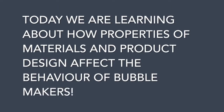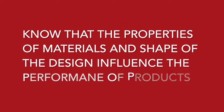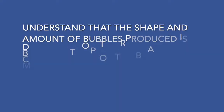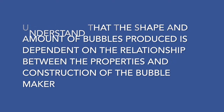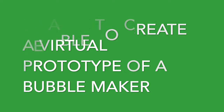Today we will be learning about how properties of materials and product design affect the behaviour of bubble makers. We will be successful if, by the end of the lesson, we know that the properties of materials and shape of the design influence the performance of products, understand that the shape and amount of bubbles produced is dependent on the relationship between the properties and construction of the bubble maker, and be able to create a virtual prototype of a bubble maker.